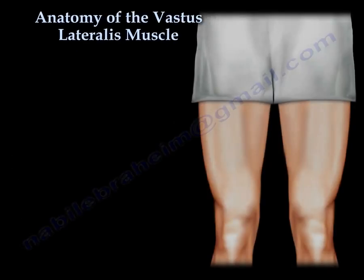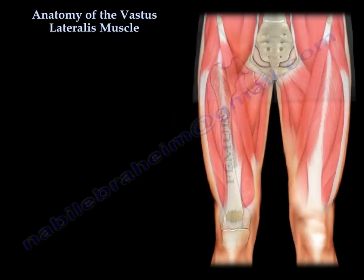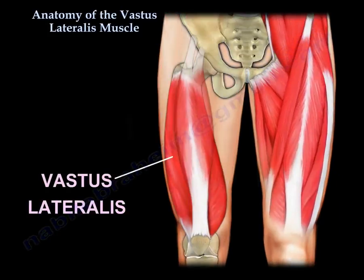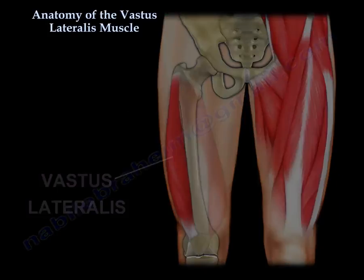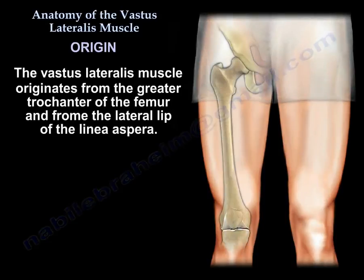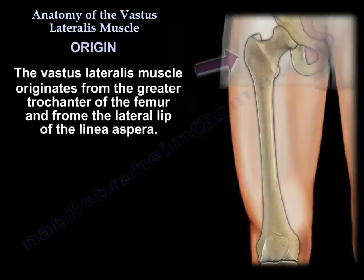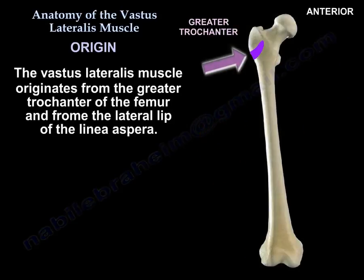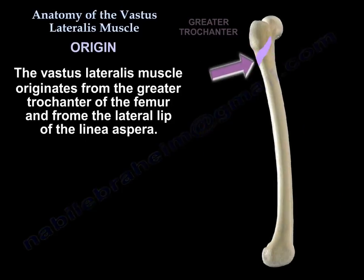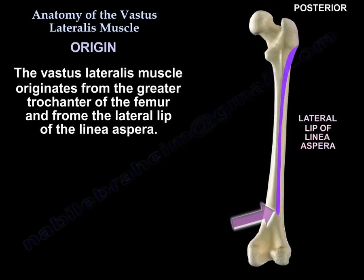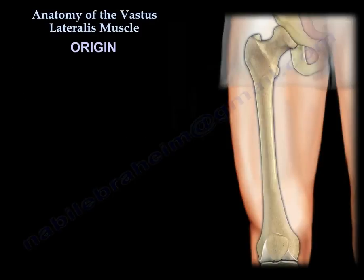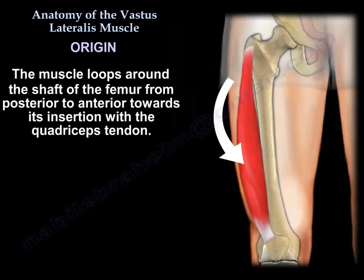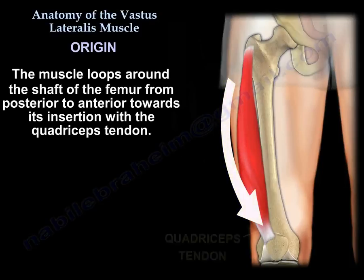Anatomy of the Vastus Lateralis Muscle. The Vastus Lateralis originates from the Greater Trochanter and from the lateral lip of the Linea Aspera. The muscle loops around the shaft of the femur from posterior to anterior towards its insertion with the Quadriceps Tendon.